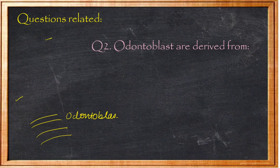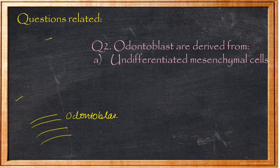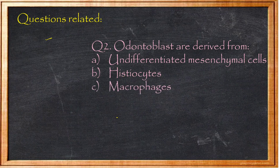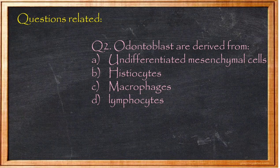Question 2: Odontoblasts are derived from — A) undifferentiated mesenchymal cells, B) histiocytes, C) macrophages, D) lymphocytes. Answer: As discussed, mesenchymal cells are totipotent cells that convert into odontoblasts, since odontoblasts cannot divide themselves. Therefore, odontoblasts are derived from undifferentiated mesenchymal cells. Answer: Option A.